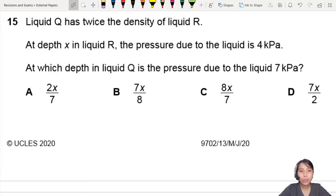There are two liquids here, liquid Q and liquid R. One has twice the density of the other. So from that first line, you can already write out some kind of relationship between Q and R.